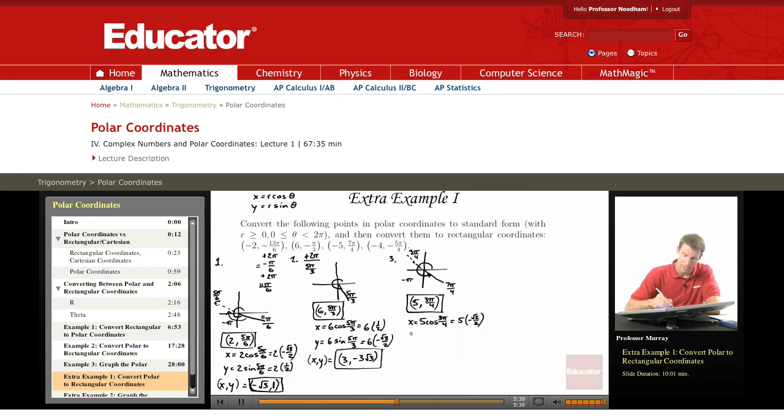And y is 5 sin of 3π over 4, which is 5 times, well the sine there is positive, so 5√2 over 2. And so the xy collectively give you the coordinates negative 5√2 over 2 and 5√2 over 2.